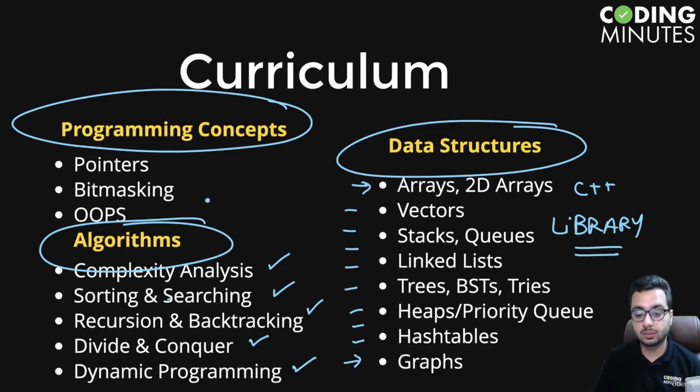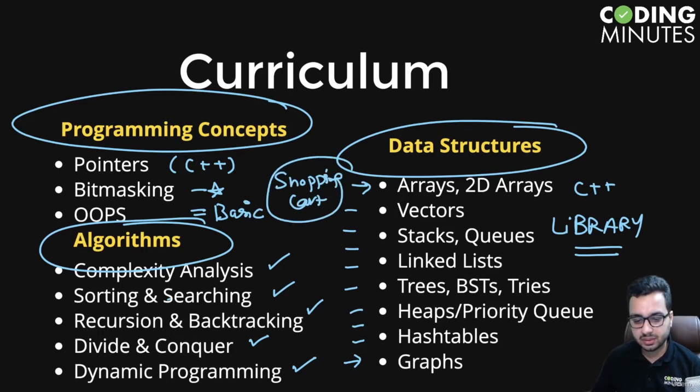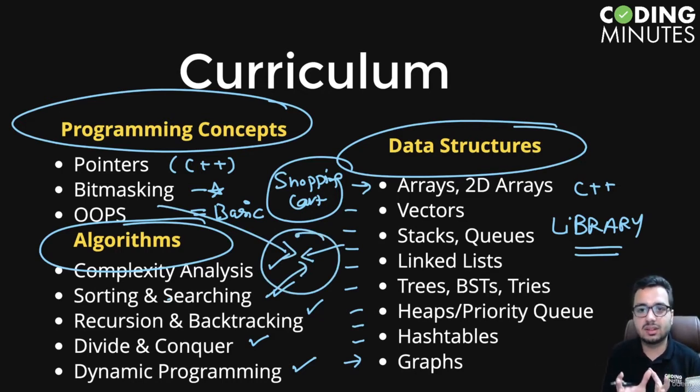Talking about programming concepts, we'll cover pointers, which is a C++ specific concept, bit masking or bit manipulation—an interesting topic many students requested—and the basics of object-oriented programming. At the end of the course, we will build a shopping cart backend using concepts from object-oriented programming, algorithms, and data structures. We will compile all these concepts in a mini project.